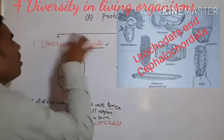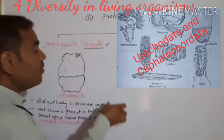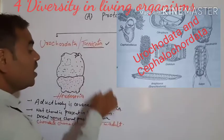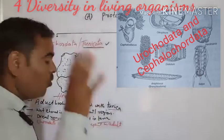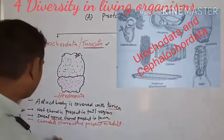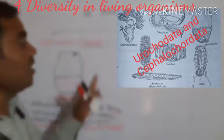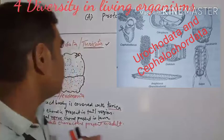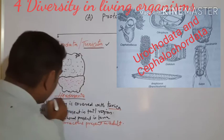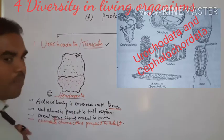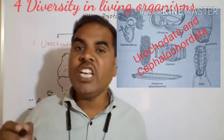Urochordata, also called Tunicata — the body is covered with tunica. Body cell walls are made from cellulose. Notochord is present in the tail region. Dorsal nerve cord is present in larvae. Chordata characters are present in the adult. The best example is Herdmania. These are solitary marine animals and can also live colonially.